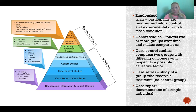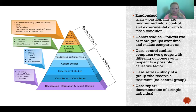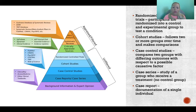The last level at the very bottom is background information and expert opinion. In some cases, expert opinion might be the best we can do if there hasn't been good research done on a topic. We don't want to discount that completely because it is meaningful when trying to determine the best course of treatment or the best way to work with an individual or organization. But if there is any other available research evidence, that would rank higher than simple background information and expert opinion.